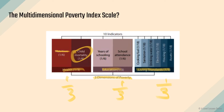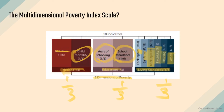For education, you're looking at years of schooling and school attendance. For living standards, you look at cooking fuel, sanitation, access to drinking water, electricity, quality of housing, and assets — both monetary and other forms. This is what MPI looks like: it combines health, education, and living standards into one index.